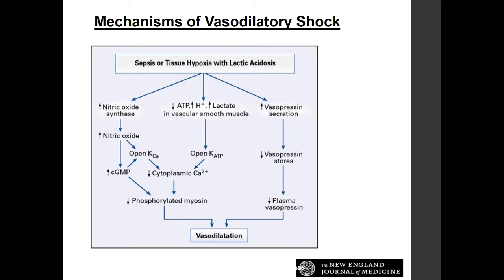Mechanisms of vasodilatory shock include sepsis and tissue hypoxia with lactic acidosis. An increase in nitric oxide synthase causes increased nitric oxide due to poor oxygen states. This opens potassium-calcium channels, increasing cGMP or decreasing cytoplasmic calcium. Decreased cytoplasmic calcium reduces phosphorylated myosin, resulting in vasodilation. Other causes of vasodilation include decreased ATP, increased hydrogen ions, and increased lactate in vascular smooth muscle, all ultimately resulting in vasodilation.